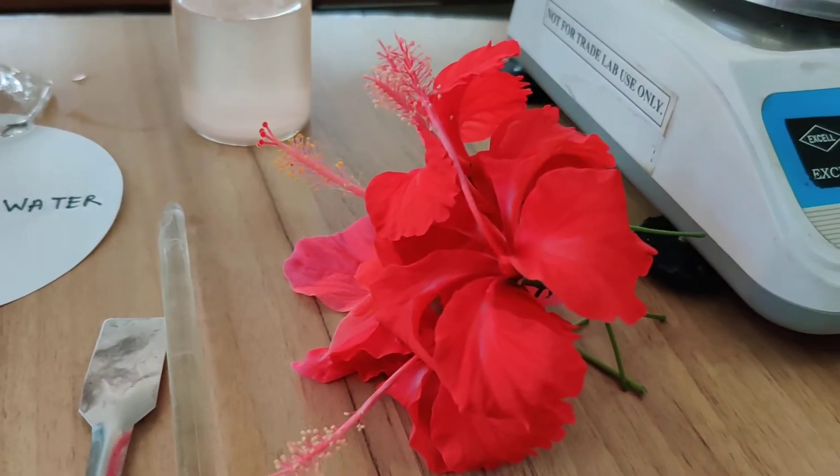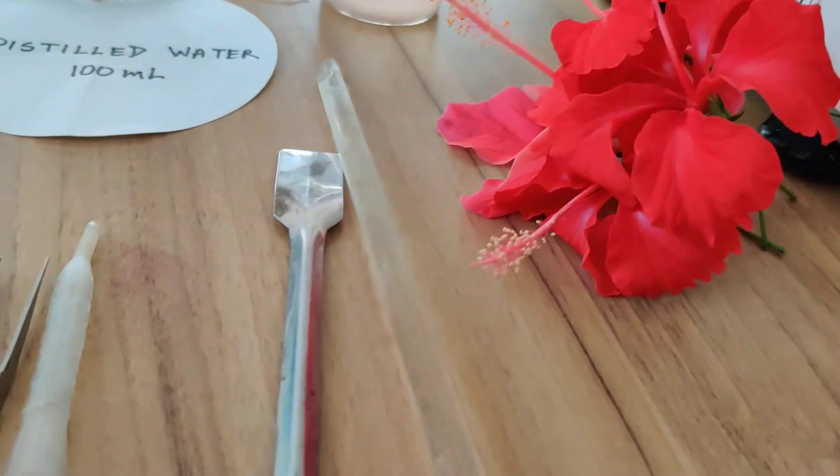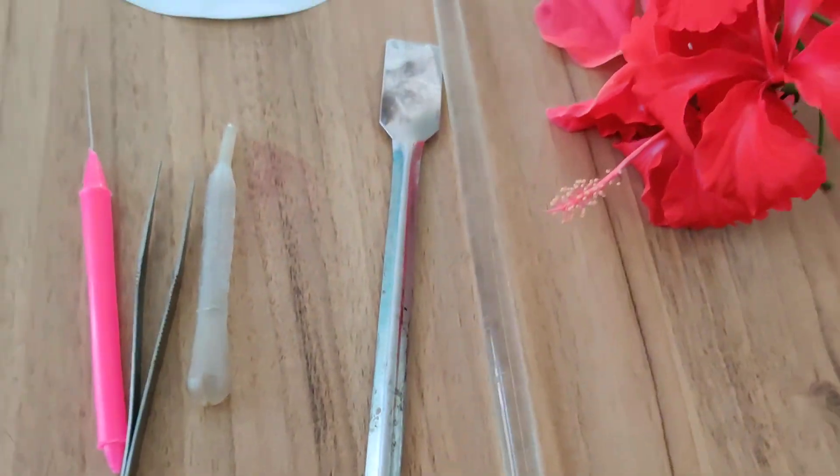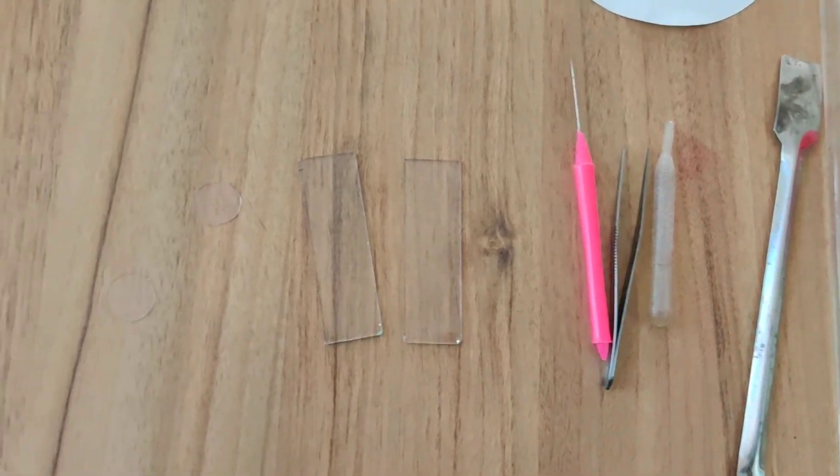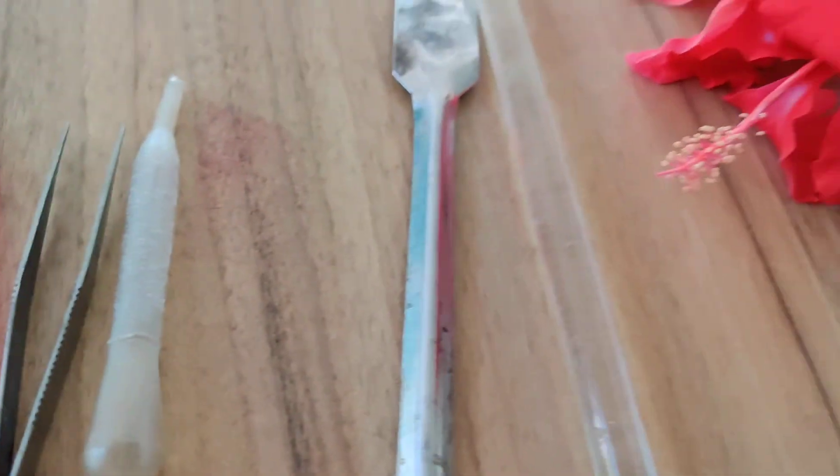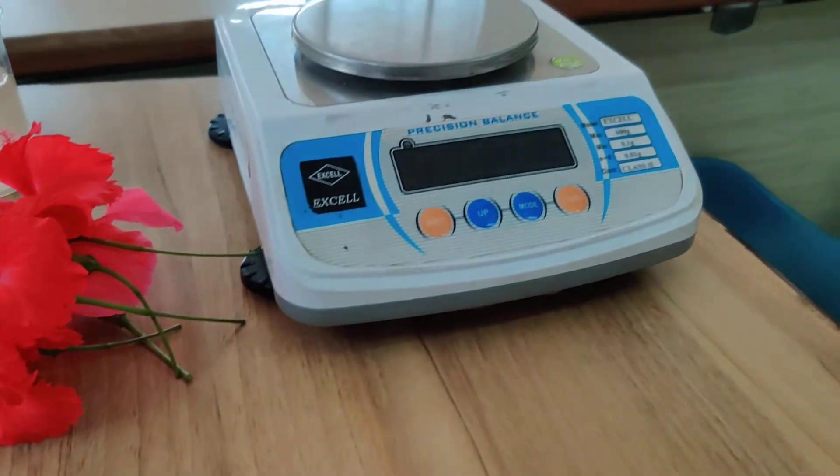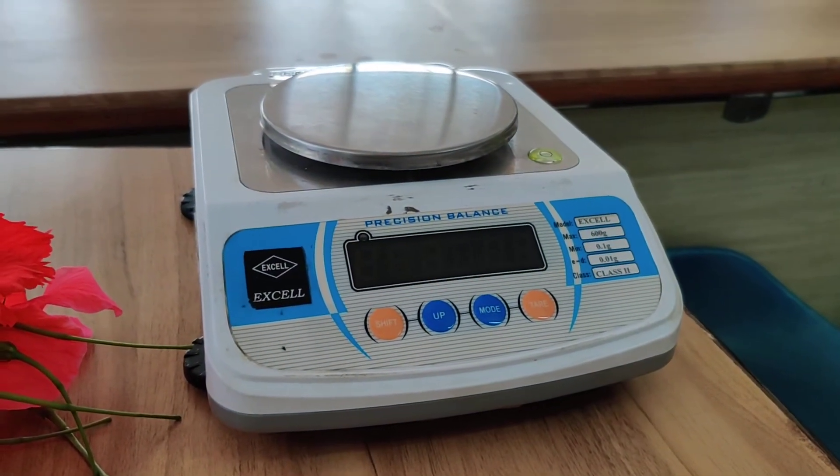We also need flowers, glass rod, spatula, dropper, forceps, needle, slides, and to weigh the chemicals we need a balance also.